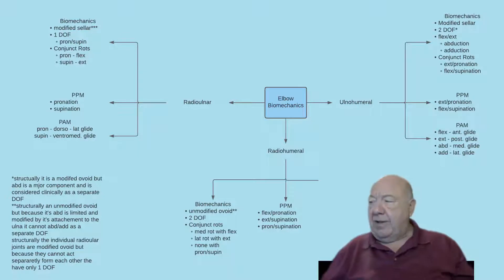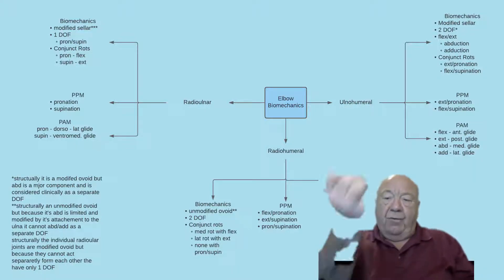So let's start with the ulnar humeral joint. Structurally, this is a modified sellar. It's got one degree of freedom: flexion and extension. Now the conjunct rotations for these are rotations of the ulna. So as we flex the elbow, the ulna will rotate laterally. Or if you prefer, full flexion of the ulnar humeral joint requires full supination of the forearm.